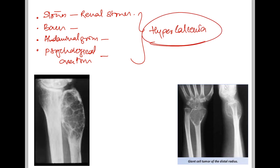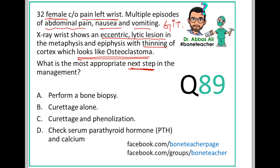This is a patient who has hypercalcemia. To confirm whether this hypercalcemia is due to primary hyperparathyroidism, we should check the serum parathyroid hormone and serum calcium. In this patient, you will find both serum parathyroid hormone and calcium elevated, confirming primary hyperparathyroidism. Therefore, the answer is D: check serum parathyroid hormone and calcium.